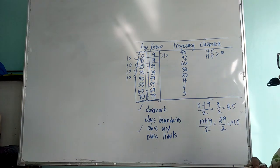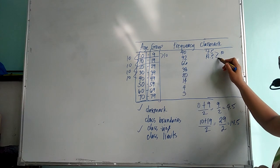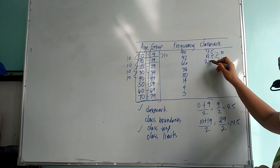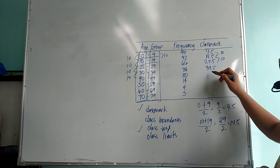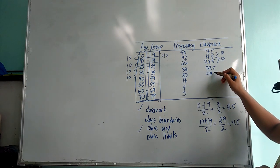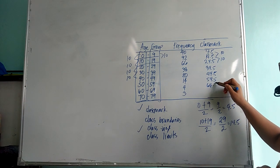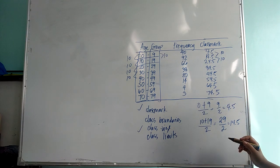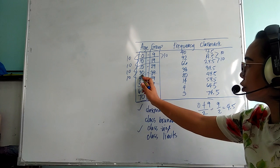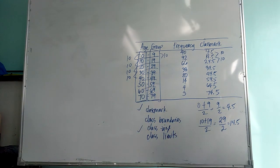That is also true for your class mark. So the next will be 24.5, and then 34.5, 44.5, 54.5, 64.5, and 74.5. So you can double check that by getting the average of your interval. So that is our class mark.